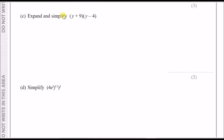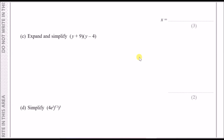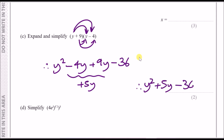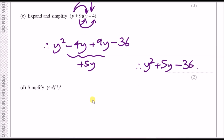Part c: expand and simplify (y + 9)(y - 4). Use the arrow method — multiply each term in the first bracket by each in the second: y × y = y², y × -4 = -4y, 9 × y = 9y, 9 × -4 = -36. Collect like terms: -4y + 9y = 5y. Final answer: y² + 5y - 36.